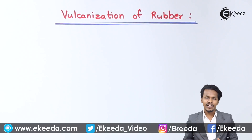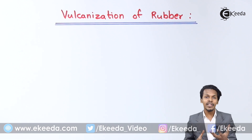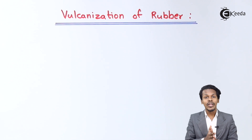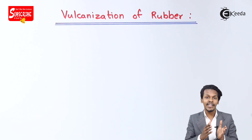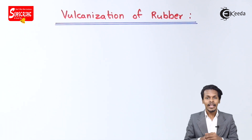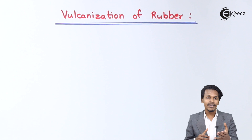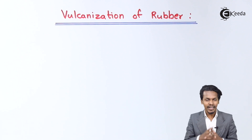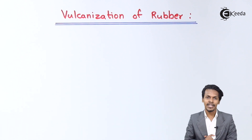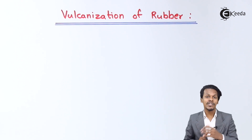So what does vulcanization mean? Vulcanization is nothing but the mixing of sulfur in an appropriate amount and at an appropriate temperature, that is between 100 degrees Celsius to 150 degrees Celsius. This kind of mixing of sulfur at a particular temperature will make the rubber harder, so this process is known as vulcanization.